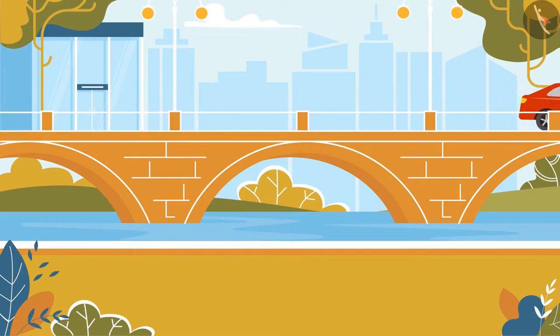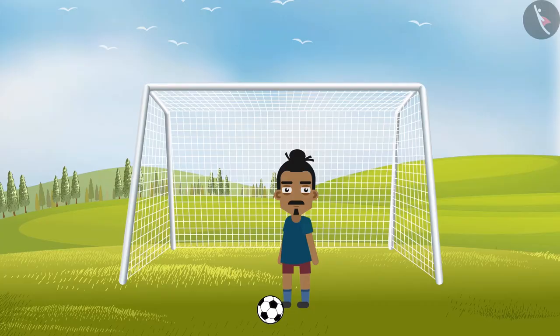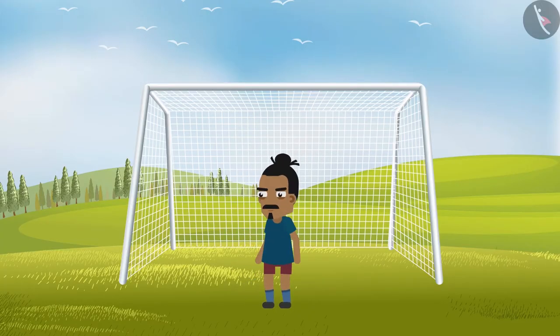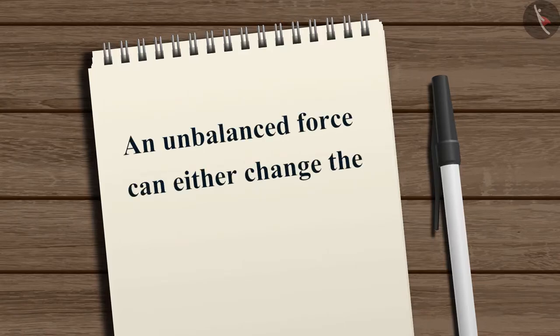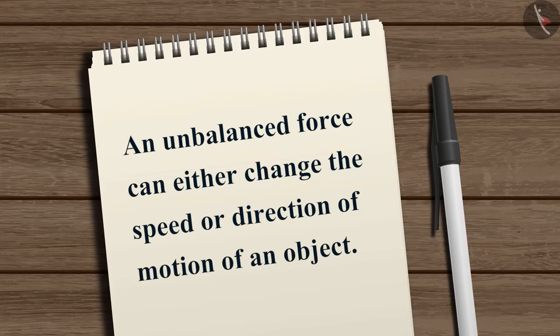Which means a change in the state of rest or state of motion is observed only when an unbalanced force is applied. A body at rest may start to move, as well as a body in motion may stop due to the application of unbalanced forces. An unbalanced force can either change the speed or direction of motion of an object.